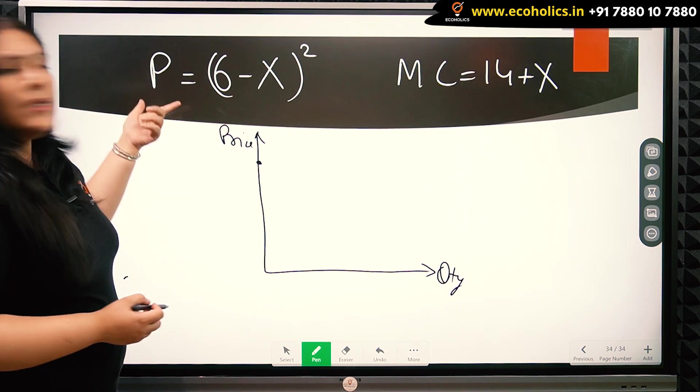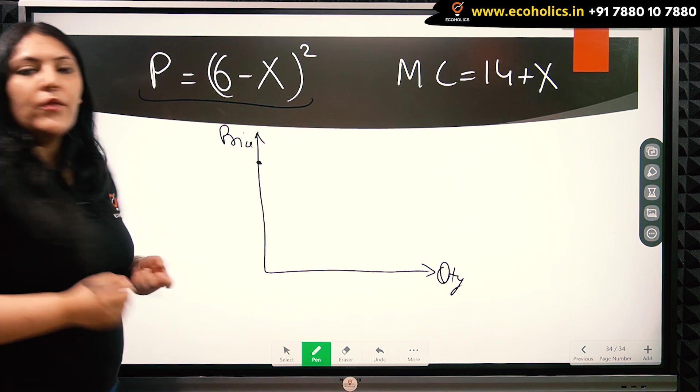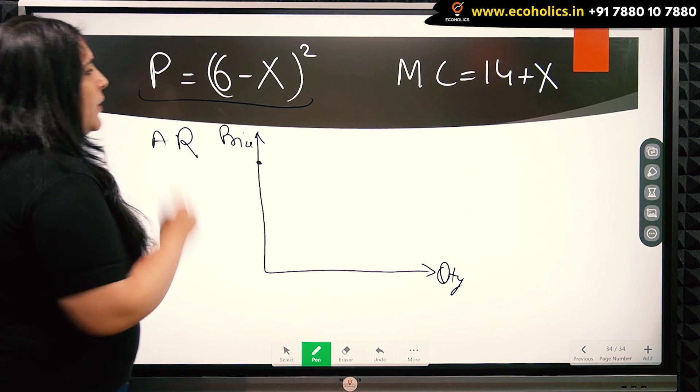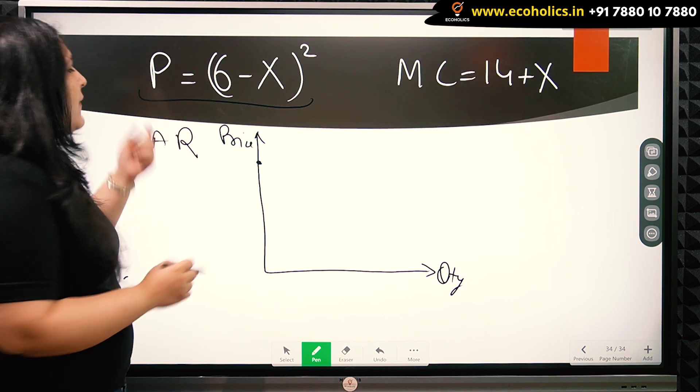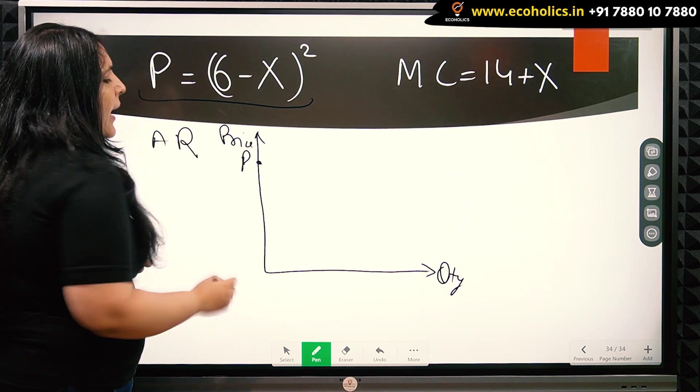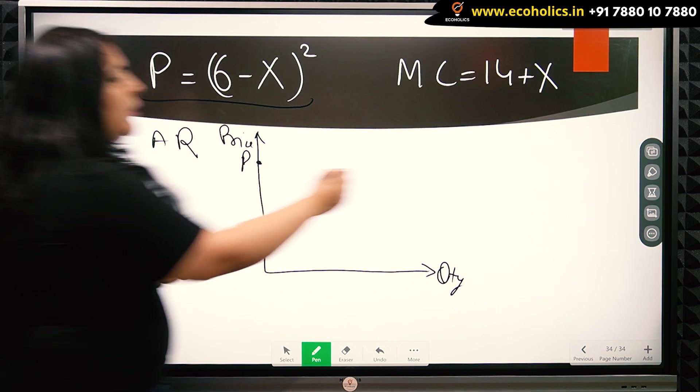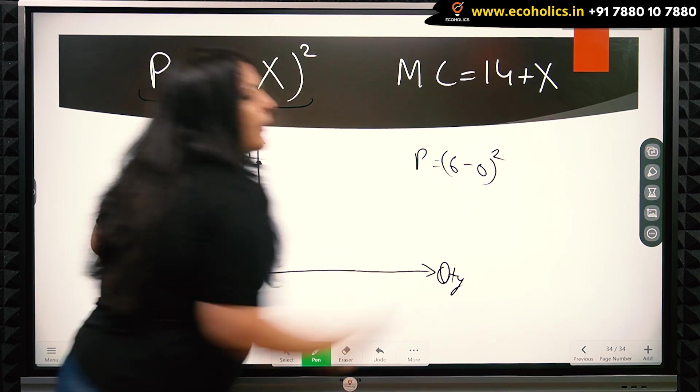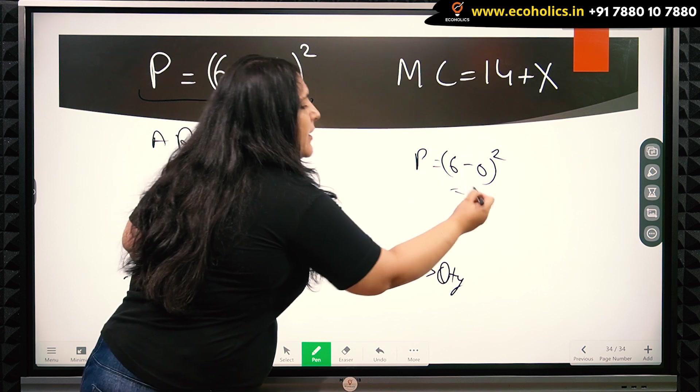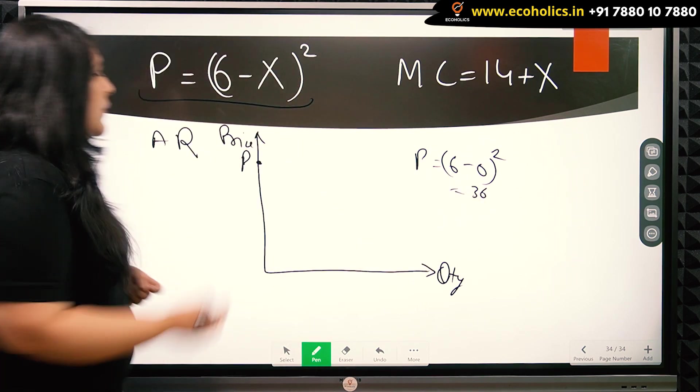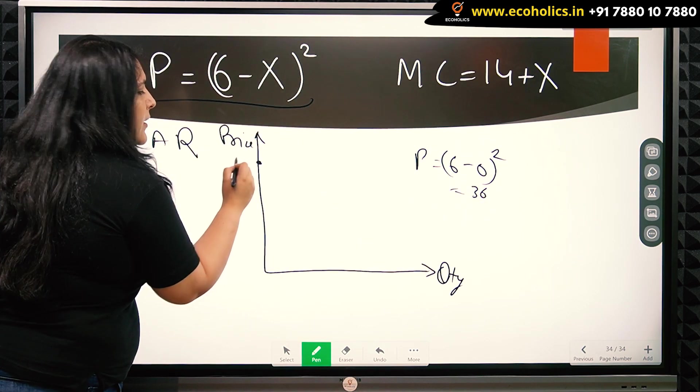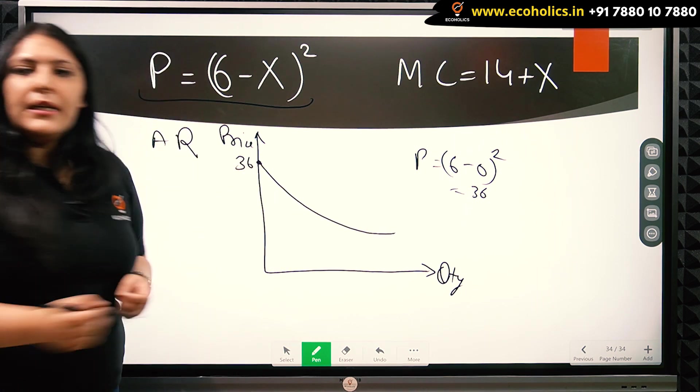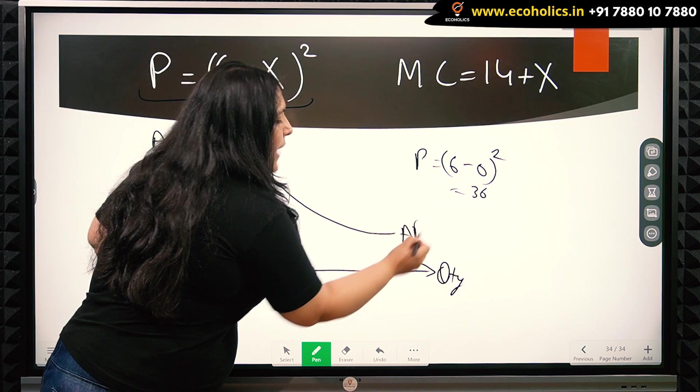So this is the price line or we call this the average revenue line. This can be plotted on this graph by knowing the value of price P at quantity 0. So we put P = 6 - 0², and see that the price comes out to be 36. So the starting point here will be marked as 36. From 36, there will be this curve that will be generated. This is the average revenue curve.